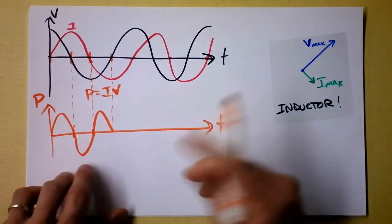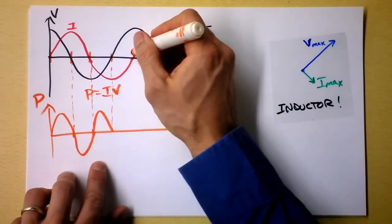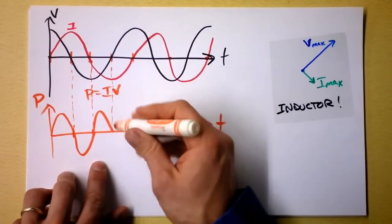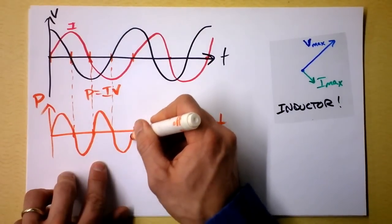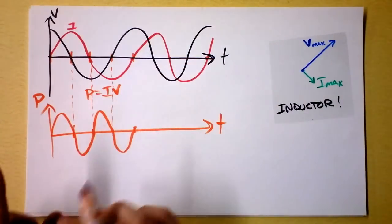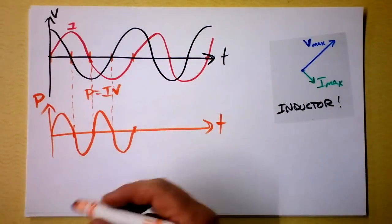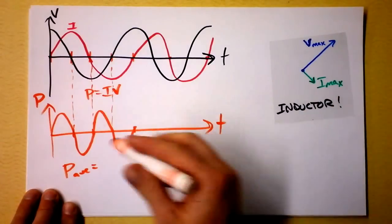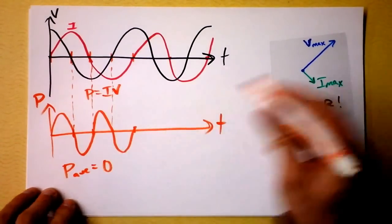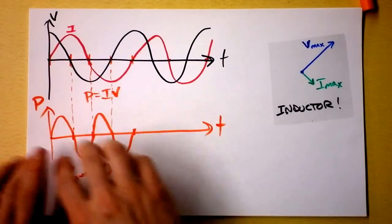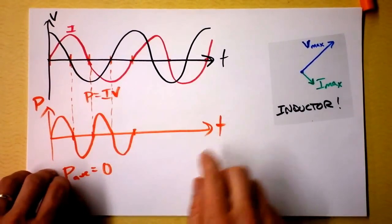The frequency of the power switching is twice the frequency of our circuit, which is kind of cool — maybe it has something to do with squaring. The wonderful thing is that the average power delivered to the inductor is zero. You're charging it up, discharging it, and getting it right back out.